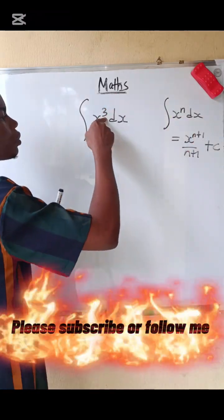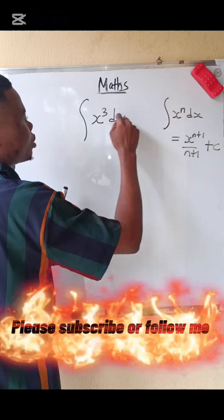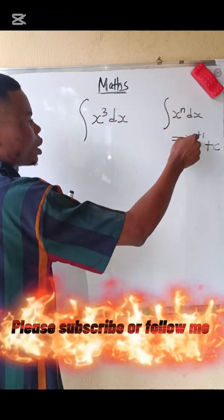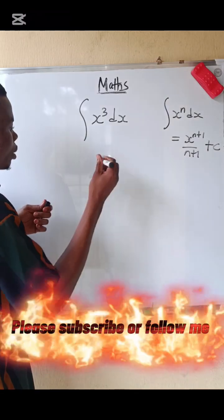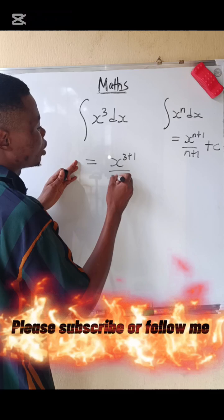So here we have three. This three represents n. Look at this, this three is the n that we are having here. So let's see, the answer becomes x three plus one all over three